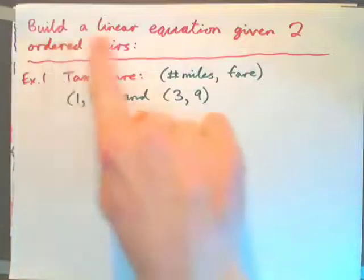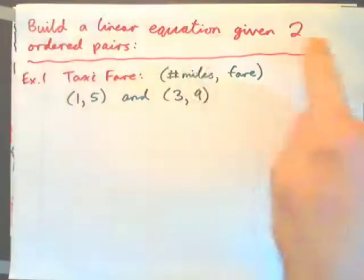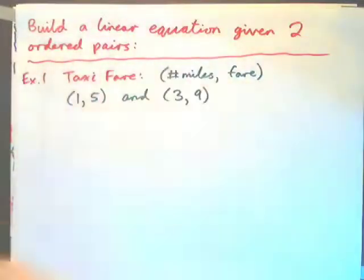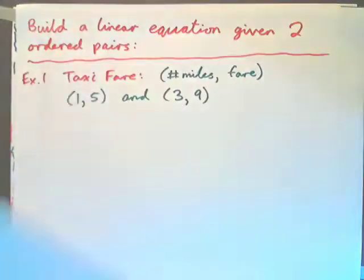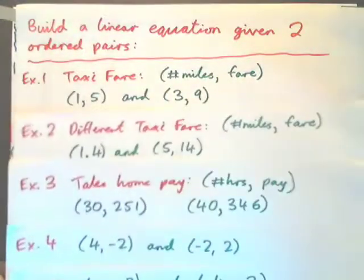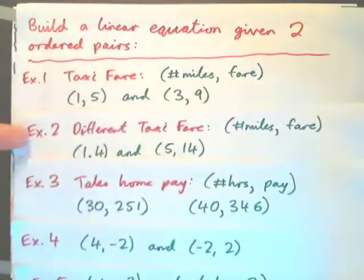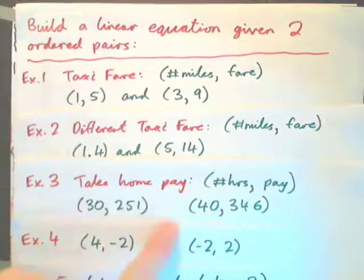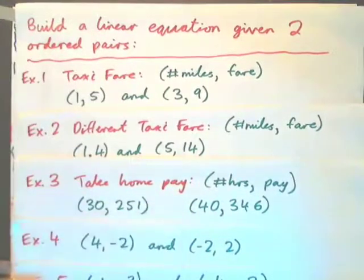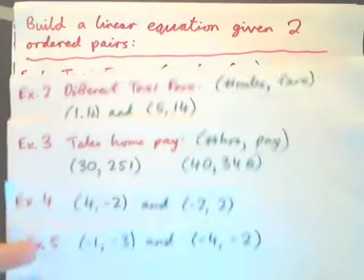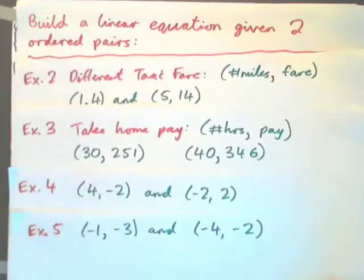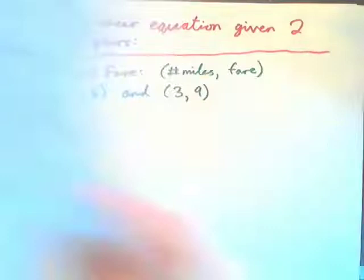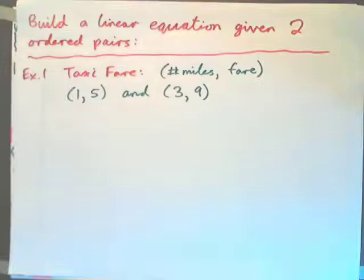In this video we are going to build a linear equation given two ordered pairs. We will start with a simple example of a taxi fare, and then we will do a different taxi fare, a take-home pay example, and then some examples that include negative numbers and fractions — five examples in all.